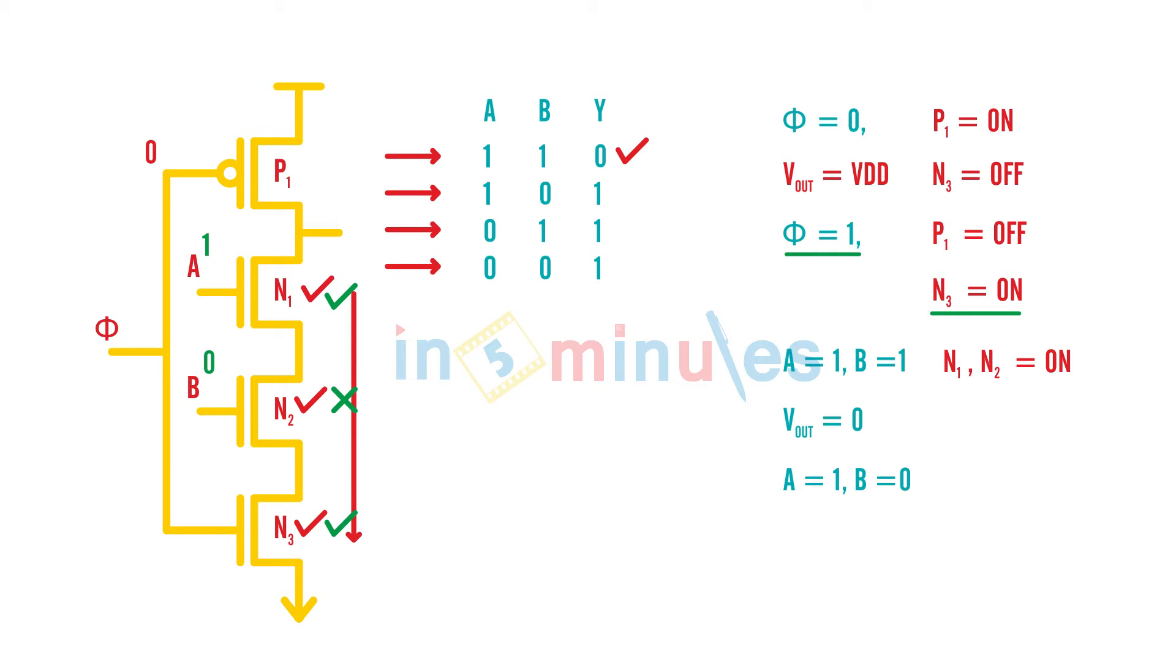But did you understand what has just happened? When we made A equal to 1 and B equal to 1, and because we are in the evaluate phase, I have already made my output 0. And I am not going back to my pre-charge phase to make my output equal to 1. So here there is no way my output can be 1 unless I go to pre-charge phase.